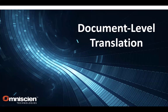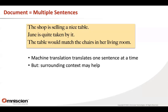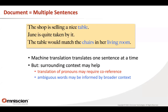Here's an example: 'The shop is selling a nice table. Jane is quite taken by it. The table would match the chairs in her living room.' MT systems typically translate one sentence at a time, but surrounding context helps. The word 'it' in the second sentence — if translating into a language with gendered nouns, you have to figure out what 'it' refers to first to find the right pronoun. Also, 'table' could be a physical table or a table of contents, but with the words 'table,' 'chair,' and 'living room' together, you know it's a physical table. These words occur two or three sentences away but help disambiguate the meaning.